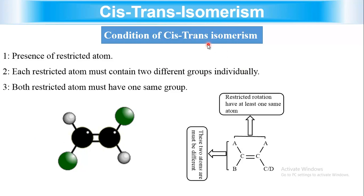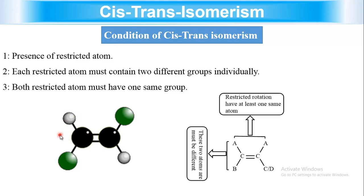Conditions required for a molecule to show cis-trans isomerism: first, there must be restricted rotation; second, each restricted atom must have two different groups; third, both restricted atoms must share one common group. For a carbon-carbon double bond with groups A, B, C, D — A and B on the same carbon must be different from each other, and similarly C and D must be different. If these conditions are met, the molecule shows geometric isomerism.